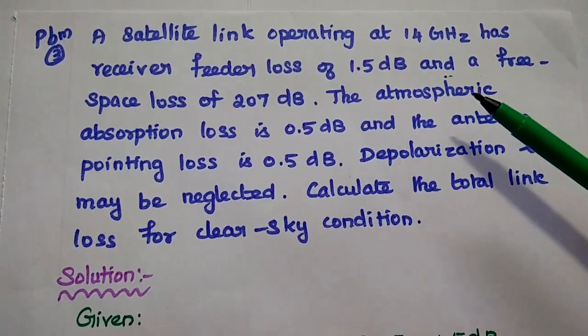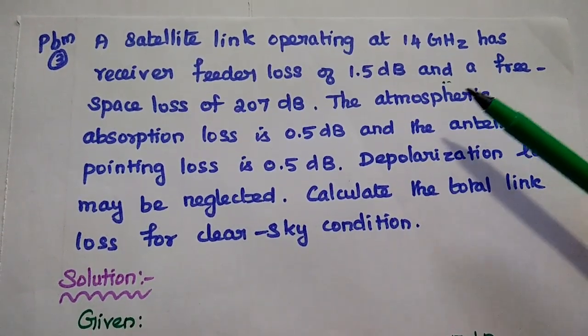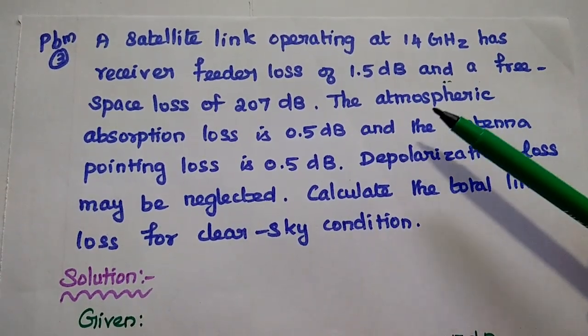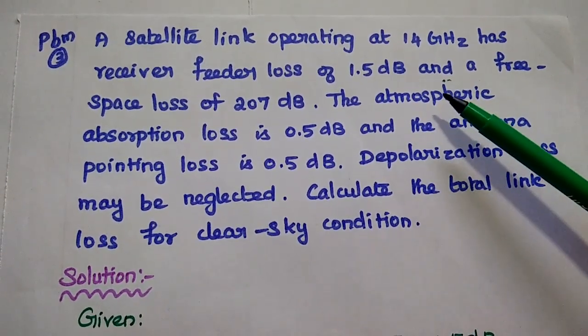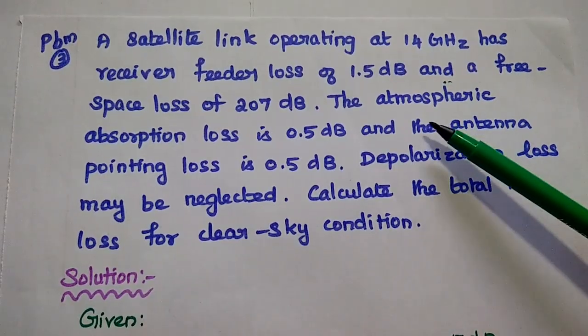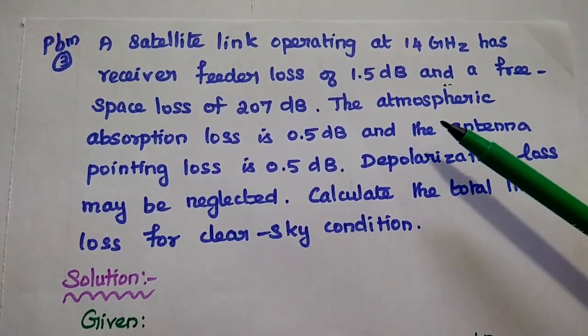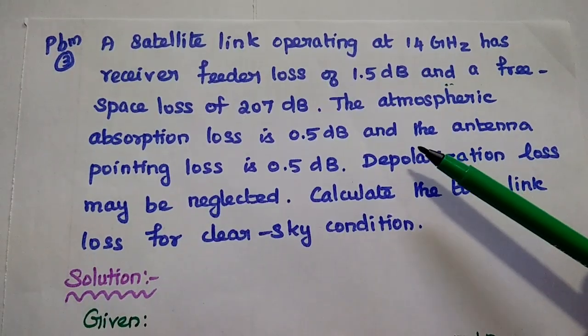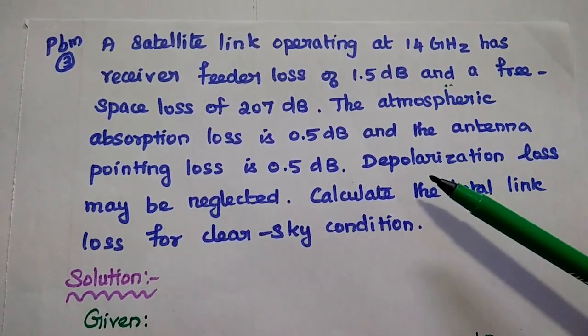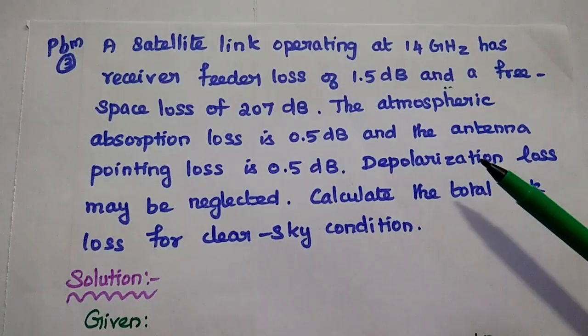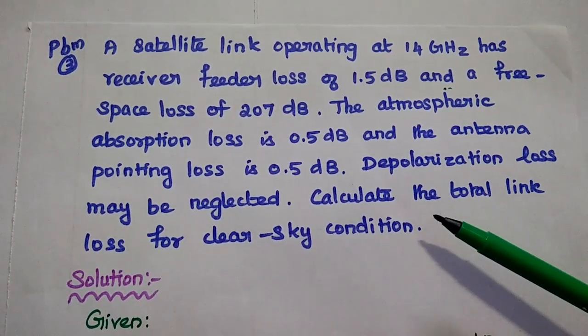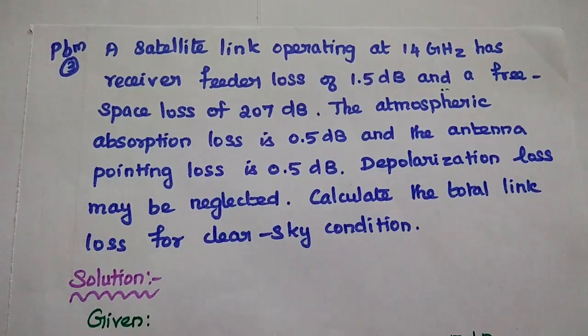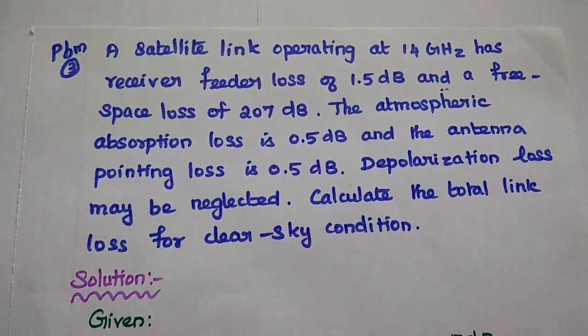The next problem is very important. A satellite link operating at 14 GHz has the receiver feeder loss of 1.5 dB and a free space loss of 207 dB. The atmospheric absorption loss is 0.5 dB and the antenna pointing loss is 0.5 dB. The polarization loss may be neglected. Calculate the total link loss for clear sky condition.